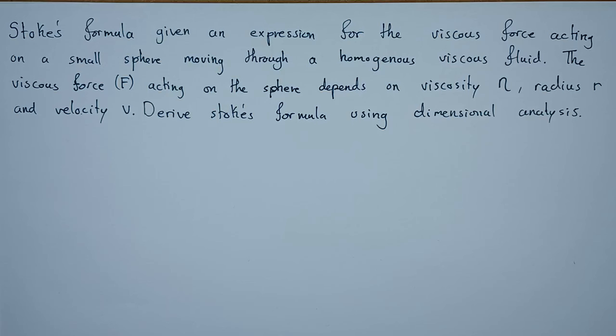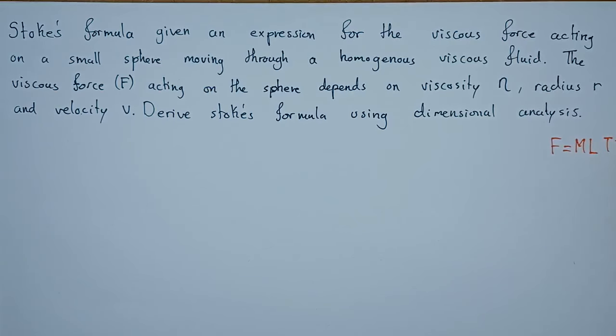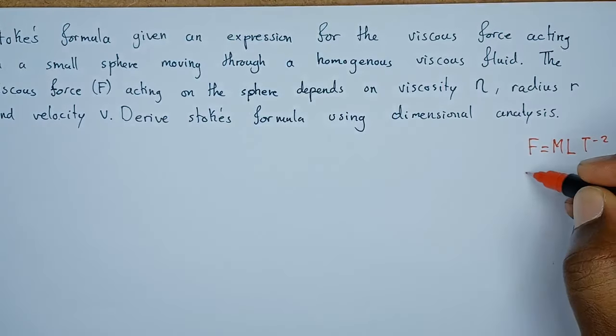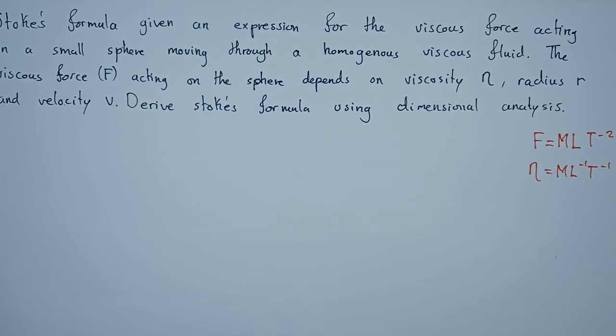To start with, it's important to note that we need to know the dimensions for each of these. Let's first list down the dimensions. For force F, dimensions are M L T⁻². Viscosity η has dimensions M L⁻¹ T⁻¹. Radius r is just a distance, so dimension is L. Velocity v is L T⁻¹. Those are the dimensions.